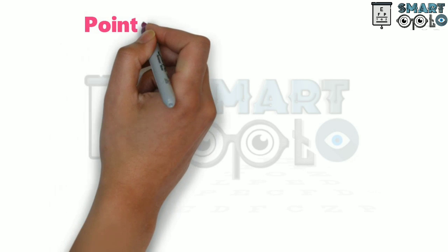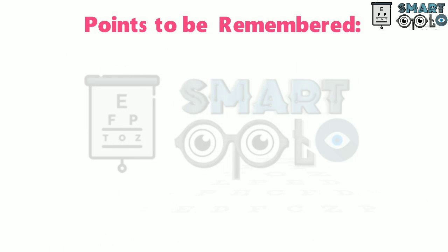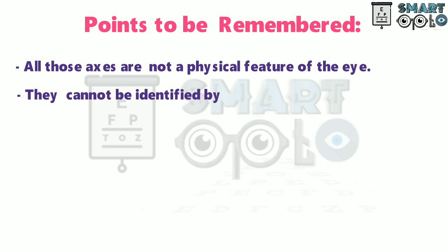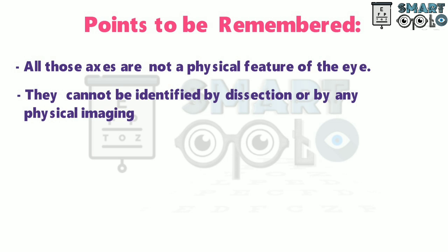These are some points to be remembered. All these axes are not a physical feature of the eye, and they cannot be identified by dissection or by any physical imaging technique.